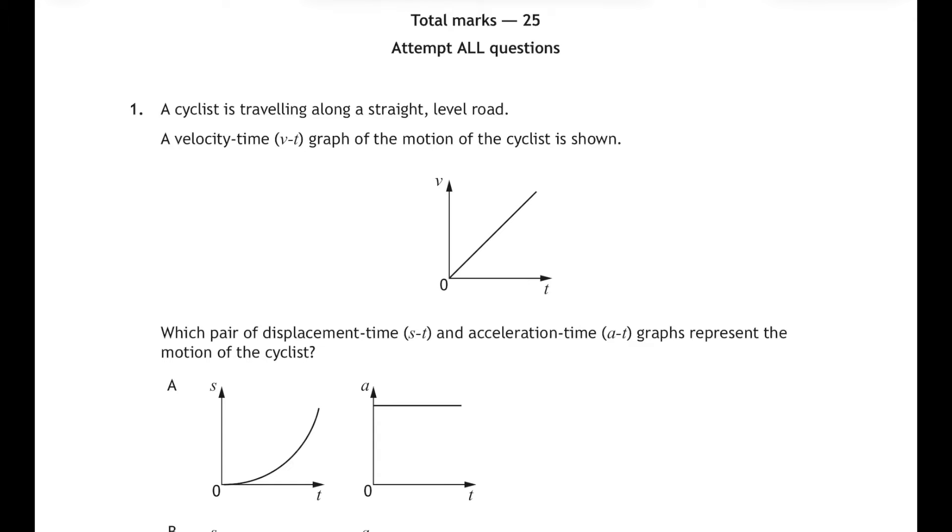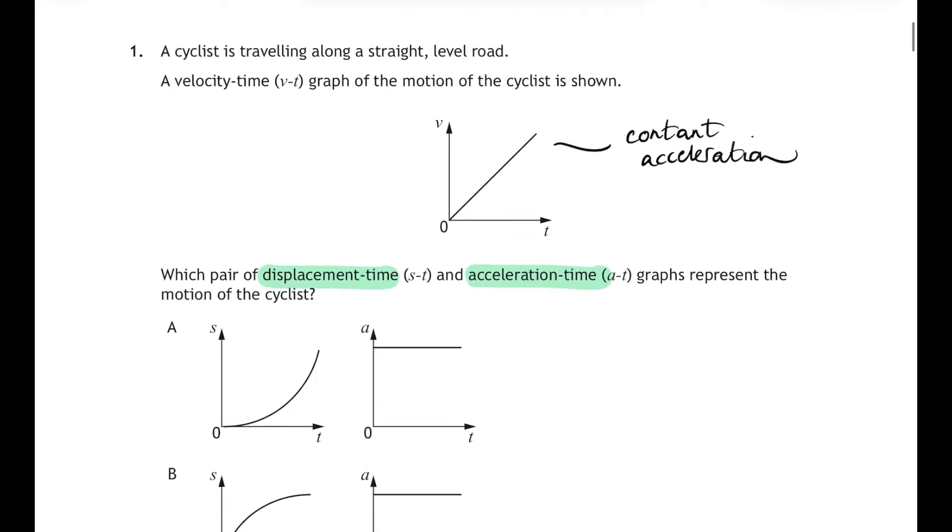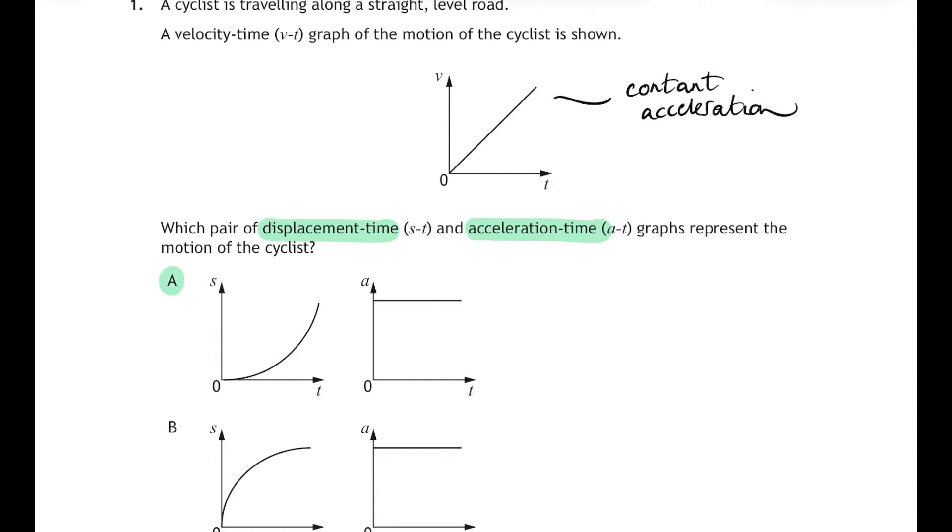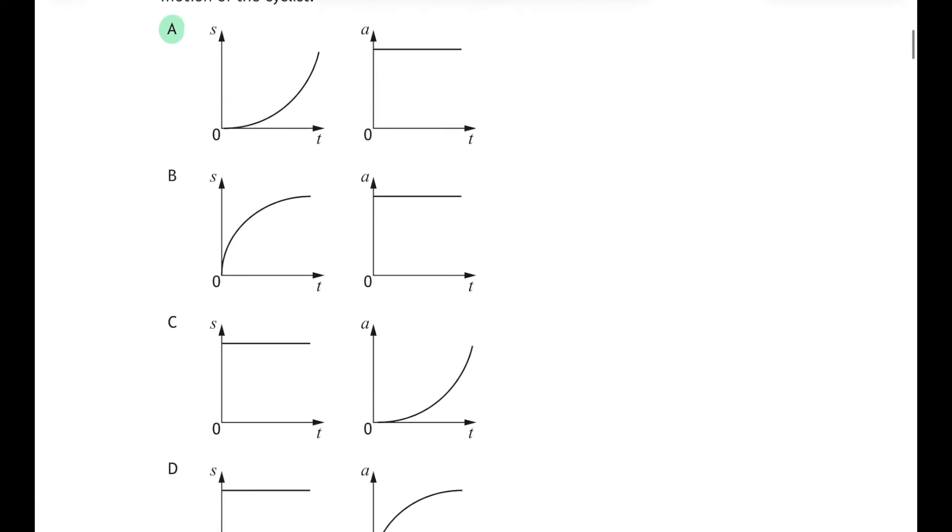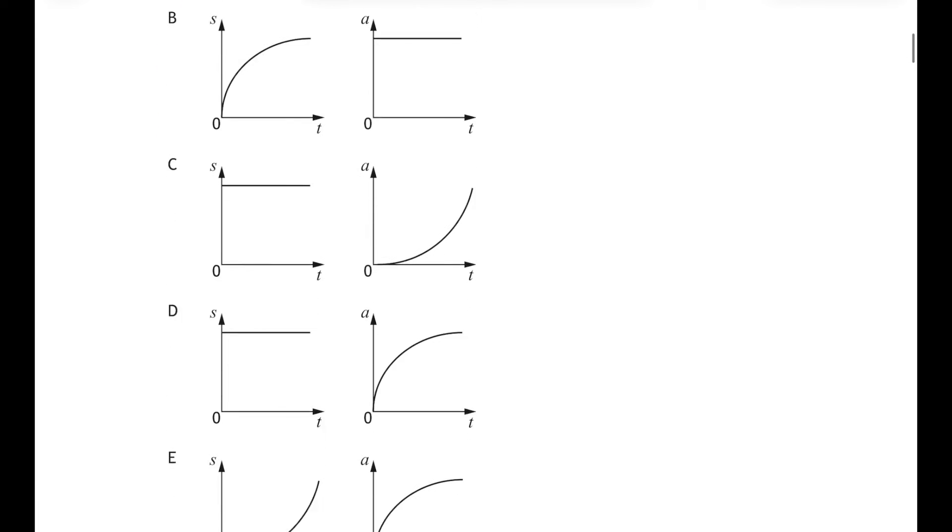You ready then? Here's question one. A cyclist is traveling along a straight level road and the velocity time graph of their motion is shown, and which pair of displacement time and acceleration time graphs represent the motion of the cyclist? Well it's a constant acceleration so we're looking for an acceleration time graph that's got a horizontal line on it and an ever increasing gradient on the displacement time graph. So answer A looks pretty good. Answer B, the displacement graph's curving the wrong way, and C, D, and E none of them have got a constant acceleration. So answer A.